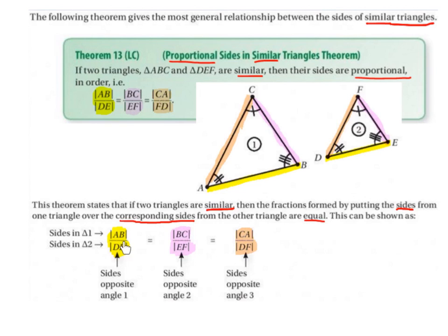These are the sides opposite angle 1 in both triangles — opposite we have AB and opposite we have DE. These are the sides opposite angle 2 — opposite we have BC and opposite we have EF. And these are the sides opposite angle 3 — opposite we have AC and opposite we have DF.